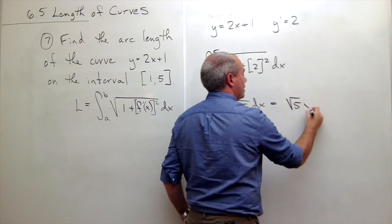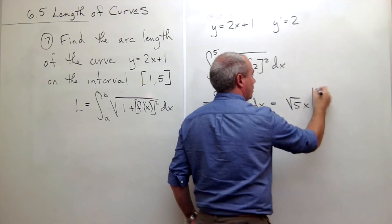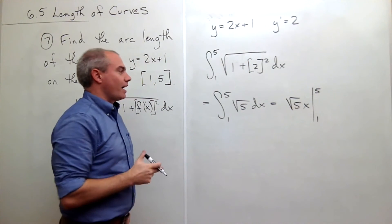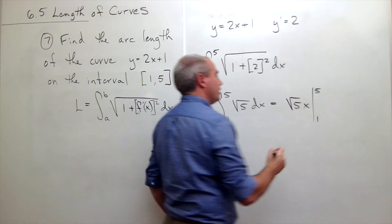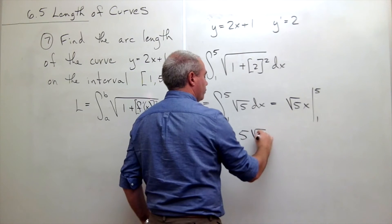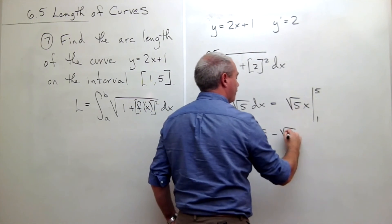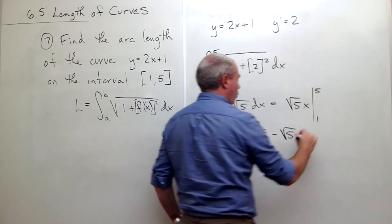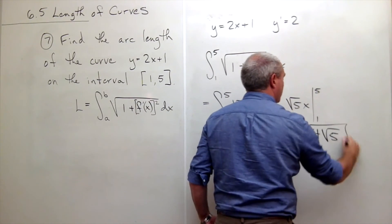Which is the square root of 5 times x evaluated from 1 to 5, which of course would be equal to 5 root 5 minus 1 times root 5, which is 4 times the square root of 5.